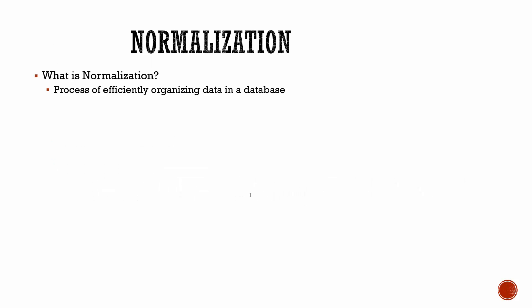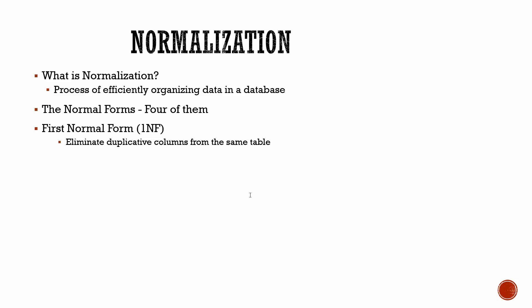Normalization is a process of efficiently organizing the data in the database. There are actually four levels of normalization. The first normal form — the first level — is to eliminate duplicative columns from the same table. We don't want multiple columns that have the same information. On our ice cream database, if we had the name in one column and then another column with the name again, we want to eliminate that.